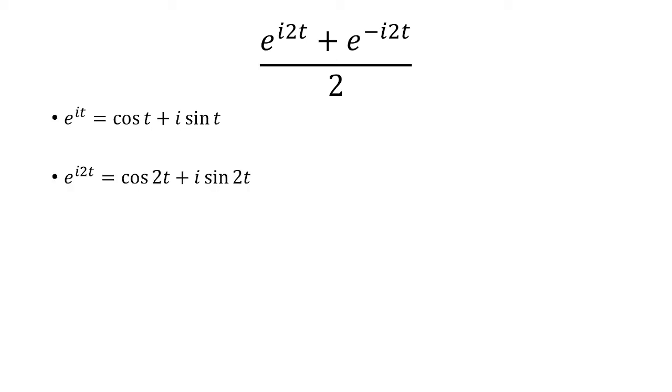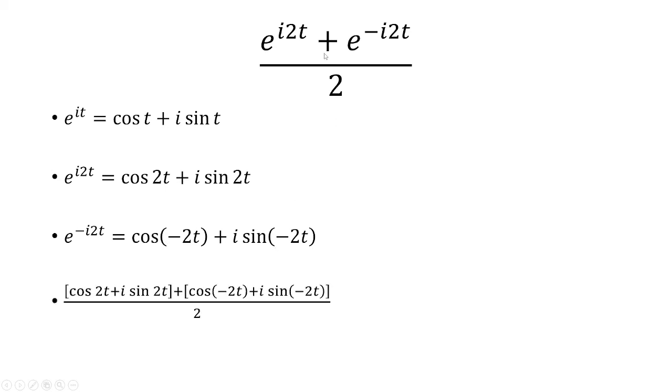Now when I replace t with 2t, I get cos(2t) + i·sin(2t). And then e^(-i2t) will put a negative inside the parentheses. Now let's plug it in.